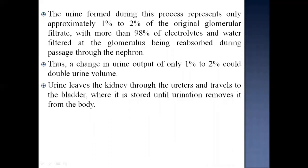The urine formed represents only approximately 1-2% of the original glomerular filtrate, with more than 98% of electrolytes and water reabsorbed during passage through the nephron. Thus a change in urine output of only 1-2% could double urine volume. Urine leaves the kidney through the ureters and travels to the bladder, where it is stored until urination removes it from the body.